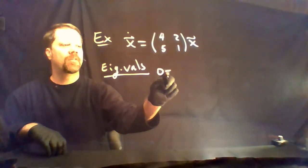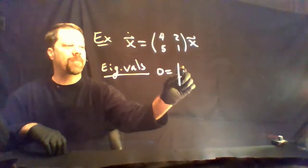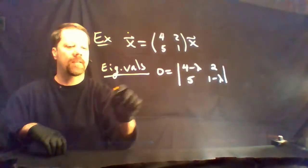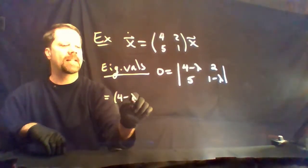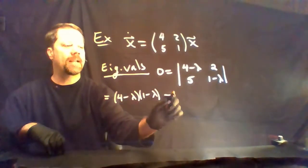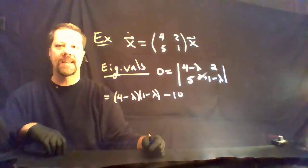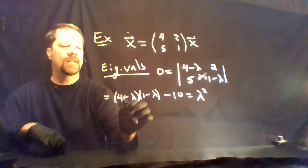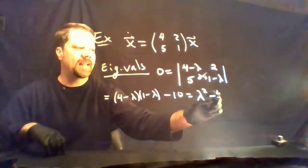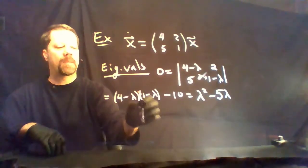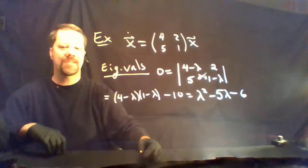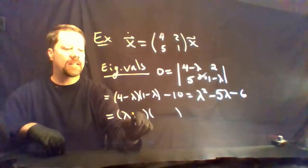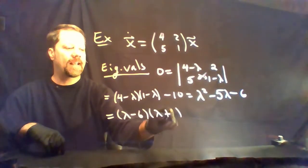To find the eigenvalues, we subtract lambda from the diagonal elements and calculate the determinant. This gives us (4 minus lambda)(1 minus lambda) minus 10. Foiling this out, we get lambda squared minus 5 lambda plus 4 minus 10, which is lambda squared minus 5 lambda minus 6. This factors nicely as (lambda minus 6)(lambda plus 1).